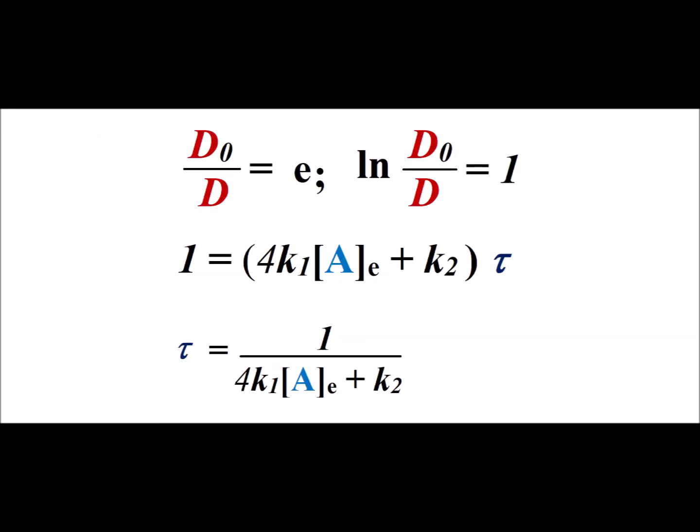Here we know that tau is when D sub zero divided by D is equal to e, so therefore the natural log of D sub zero divided by D is equal to one. So we assign that to the left hand side of our expression, and we get that one is equal to 4k1 times the equilibrium concentration of A plus k2. And then rearranging we get our expression for the relaxation time tau, one over 4k1 times the equilibrium concentration of A plus k2.